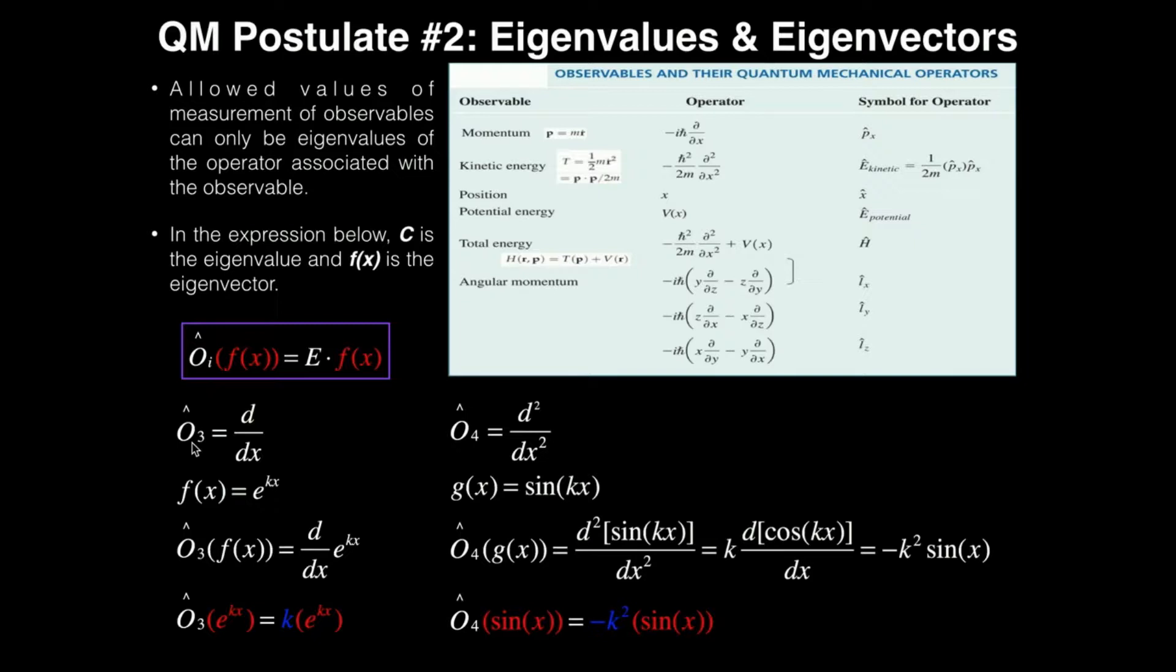Suppose we have a third operator. Let's say this is our operator O-hat 3, and let's say the operation is the first derivative with respect to x. Now let's define our function f(x). Let's say it's e^(kx). So I'm going to operate on f(x), O3 on f(x), which means taking the first derivative with respect to x of e^(kx). Well, when I operate and do a derivative on an exponential function, I get the same function back, e^(kx), times the derivative of the inside function, kx, which is just k, which comes out in front here.